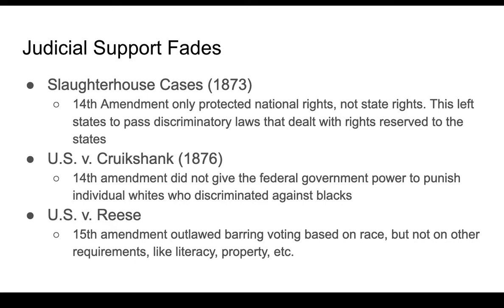Another judicial setback came in 1876, when it was decided that not only could the 14th Amendment not influence states' rights, but the federal government also had no power to punish people who violated the laws, effectively taking away the enforcement wing of the federal government. In a related case, U.S. versus Reese, involving the 15th Amendment — which bars discrimination in voting based on race — the Court decided that other voting requirements were not necessarily banned.